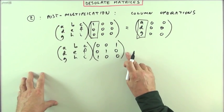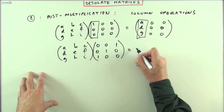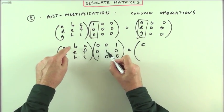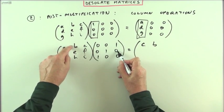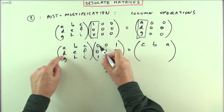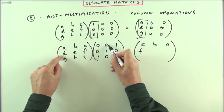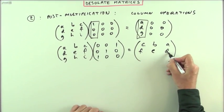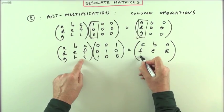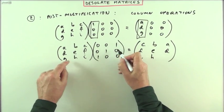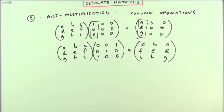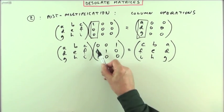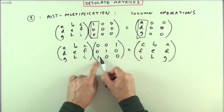What happens if I post-multiply by the reverse identity matrix? Going through the steps: I get 0+0+C, 0+B+0, A+0+0 for the first column entries; then 0+0+F, 0+E+0, D+0+0; then 0+0+I, 0+H+0, G+0+0. Looking at the column operations, the first column of the desolate matrix says: for the first column in the answer, I'm going to write the third column.